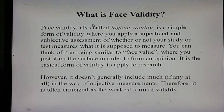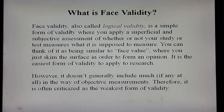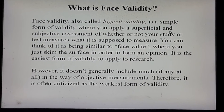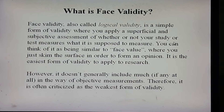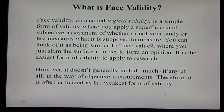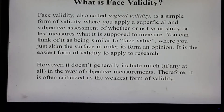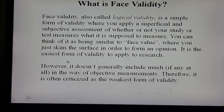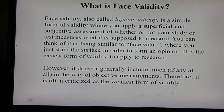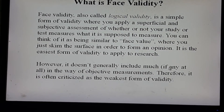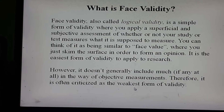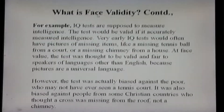The first type of validity is face validity, also called logical validity. It is a simple form of validity where you apply a superficial and subjective assessment of whether your study or test measures what it is supposed to measure. You can think of it as being similar to face value — you just skim the surface to form an opinion. It is the easiest form of validity to apply to research; however, it is often criticized as the weakest form of validity because it does not generally include objective measurements.